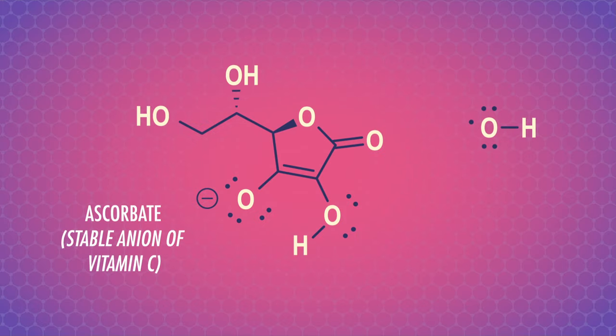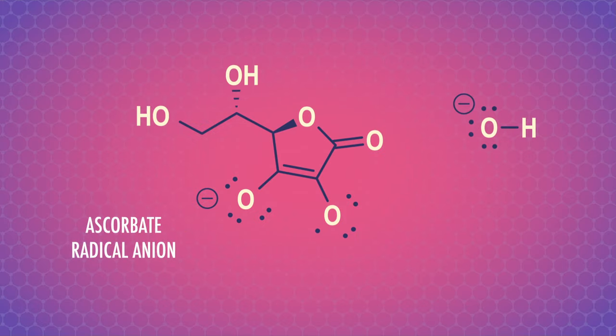When our enzymes are overwhelmed, antioxidants can come to the rescue, giving up single electrons to neutralize cell-damaging radicals. For example, vitamin C can donate a hydrogen with a single electron to neutralize ROS.